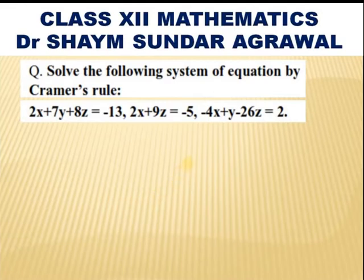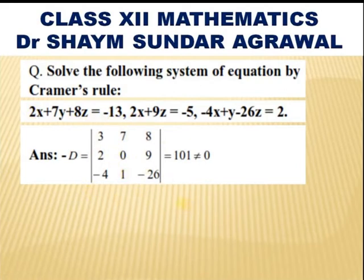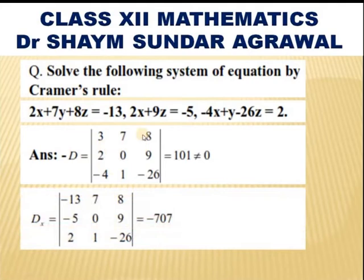Let us solve: 3x + 7y + 8z = −13, 2x + 0y + 9z = −5, −4x + y − 6z = 2. First we find D, the determinant of the coefficients of x, y, z: |3 7 8 / 2 0 9 / −4 1 −6|. Its value is 1 (not equal to 0), meaning it has a unique solution.